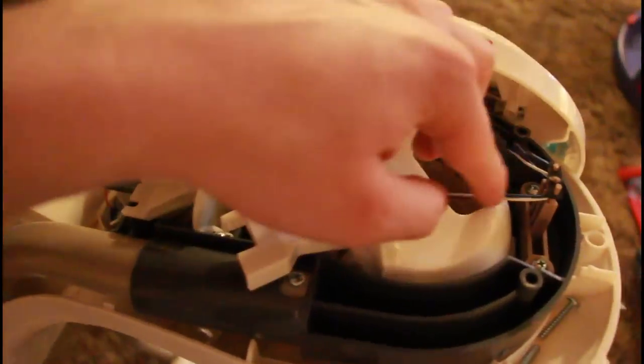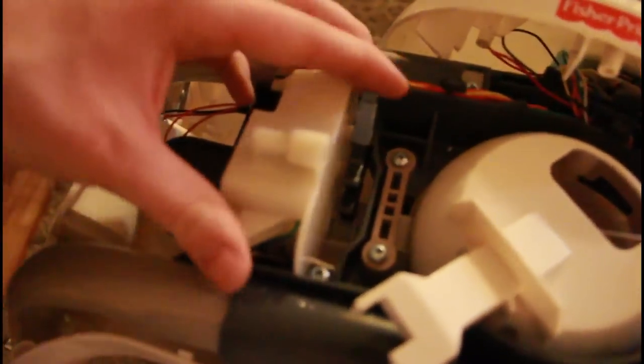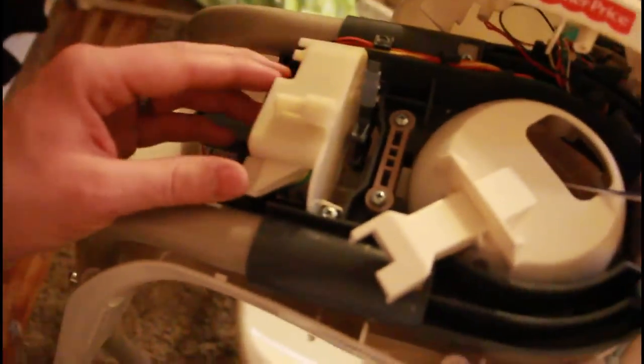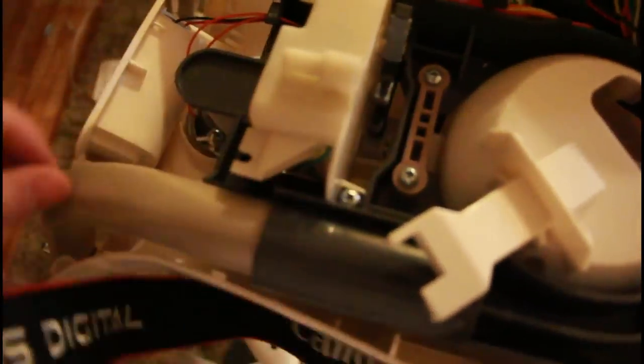You just pull it around. Make sure you don't undo that wire. Otherwise, you won't have a spinning mobile thing because those are the wires that go to that. So then the next part is taking this out. There's just going to be one, two screws.